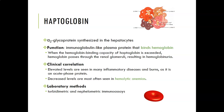Haptoglobin is an alpha-2 glycoprotein synthesized by hepatocytes in the liver. Its function is as an immunoglobulin-like plasma protein that binds hemoglobin. When the hemoglobin-binding capacity of haptoglobin is exceeded, hemoglobin starts passing through the renal glomeruli and you will see hemoglobinuria — your urine dipstick would be positive for blood.